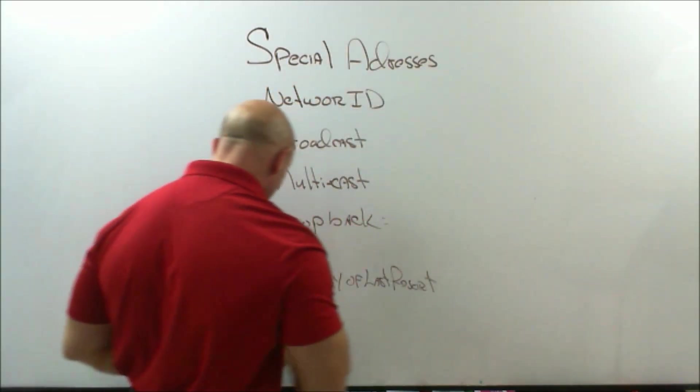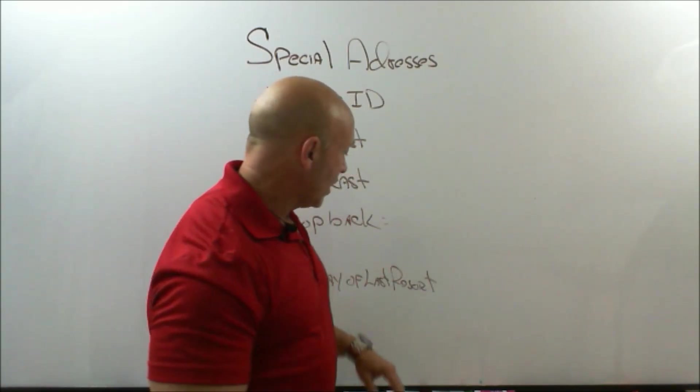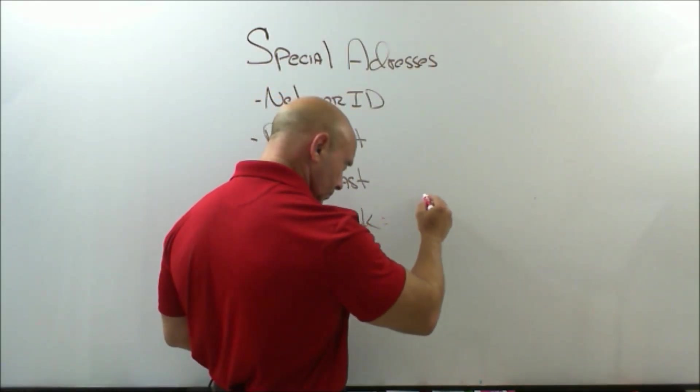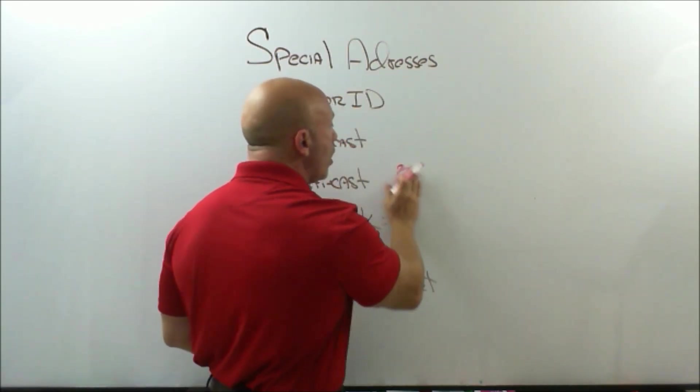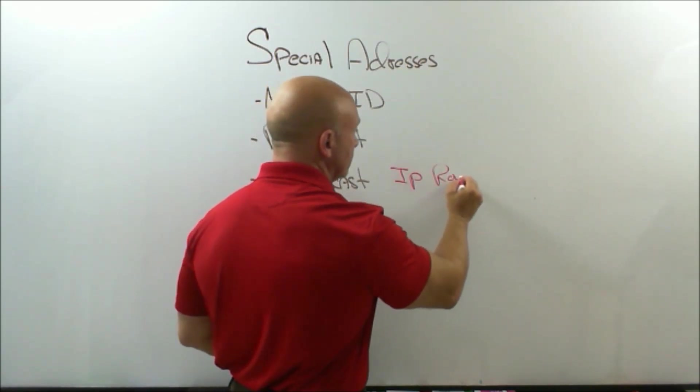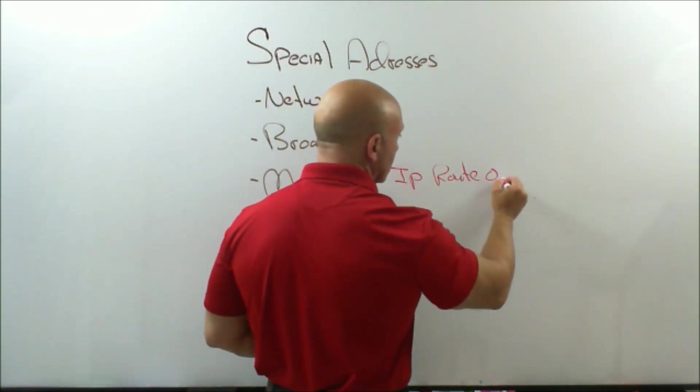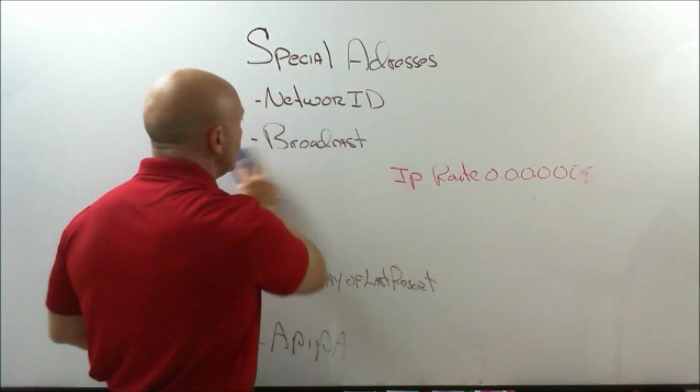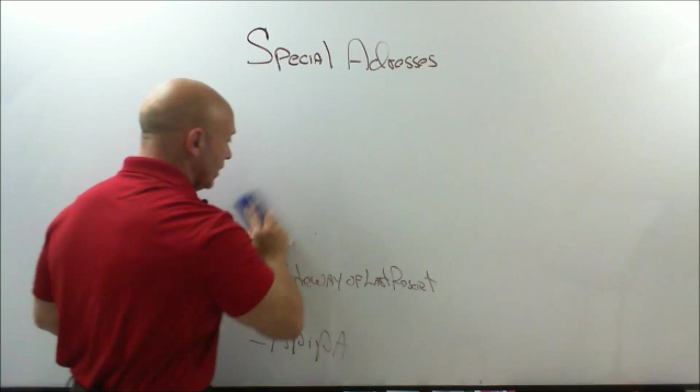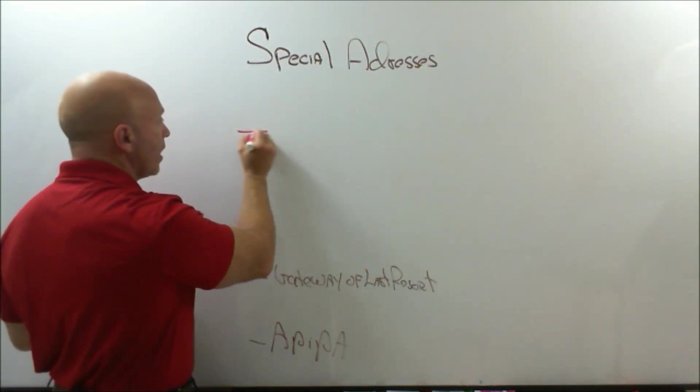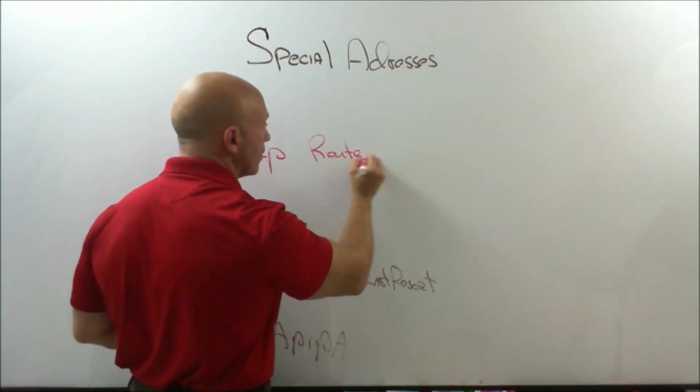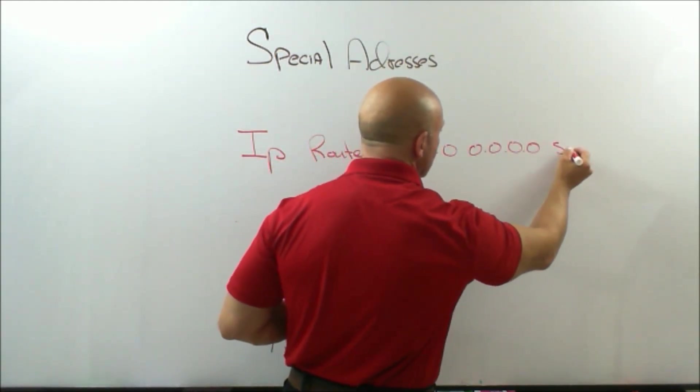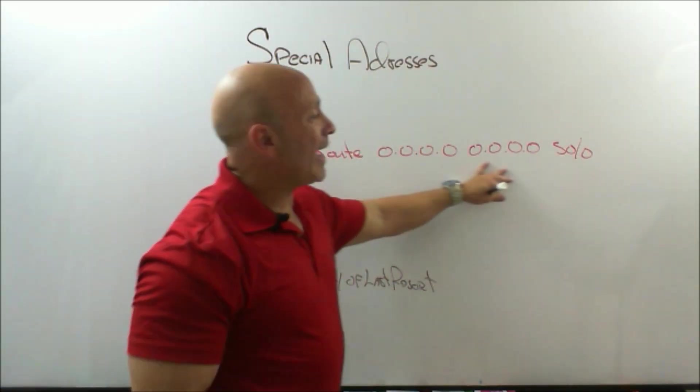This one, the gateway of last resort. All these are special types of addresses. The gateway of last resort. What is the gateway of last resort, and what does it look like? If you were to enter this command on a router: IP route 0.0.0.0 0.0.0.0 and let's just use the exit interface. You just created a default route.